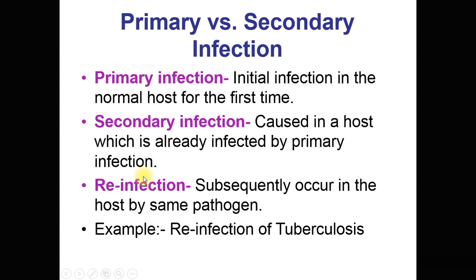Reinfection is different from secondary infection. Reinfection is the subsequent infection in the host by the same pathogen — the host has recovered from one infection, and then the same pathogen enters again and causes infection. For example, reinfection in the case of tuberculosis.